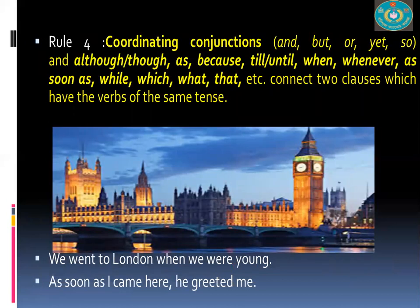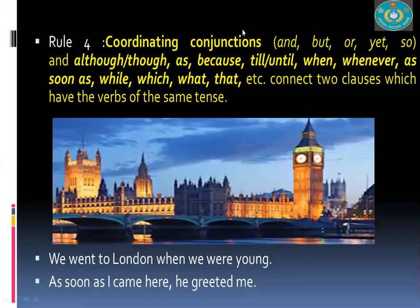Coordinating and subordinating conjunctions — and, but, or, yet, so, although, though, as, because, till, until, when, whenever, as soon as, while, which, what, that, etc. — connect two clauses which have verbs of the same tense. 'We went to London when we were young.' 'As soon as I came, he greeted me.' In both parts of these sentences, you have similar tense throughout.